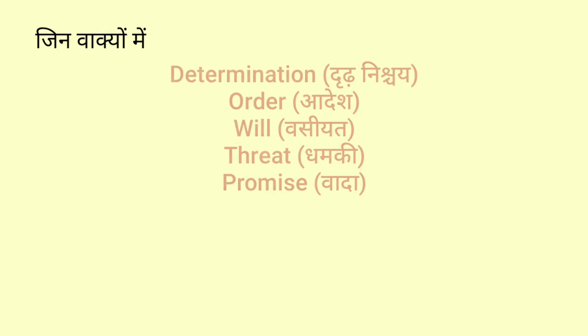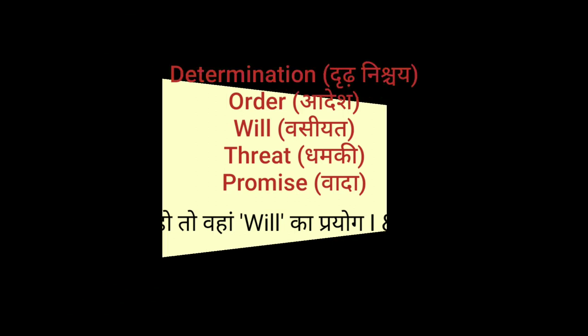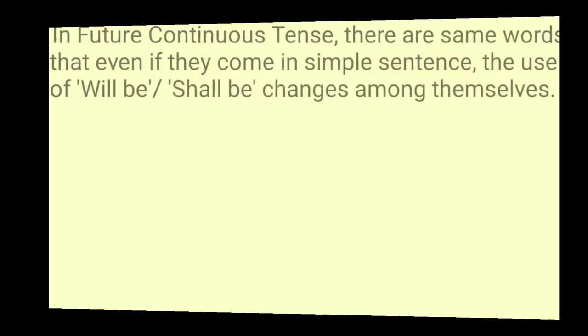Jinmein dran nishche, aadesh, vasiyat, dhamki, vaada aadi ki ichchha prakat ho, to wahan 'will' ka prayog I aur we ke saath kiya jaata hai aur 'shall' ka prayog he, she, it, name, you, they ke saath kiya jaata hai. Second point hai...